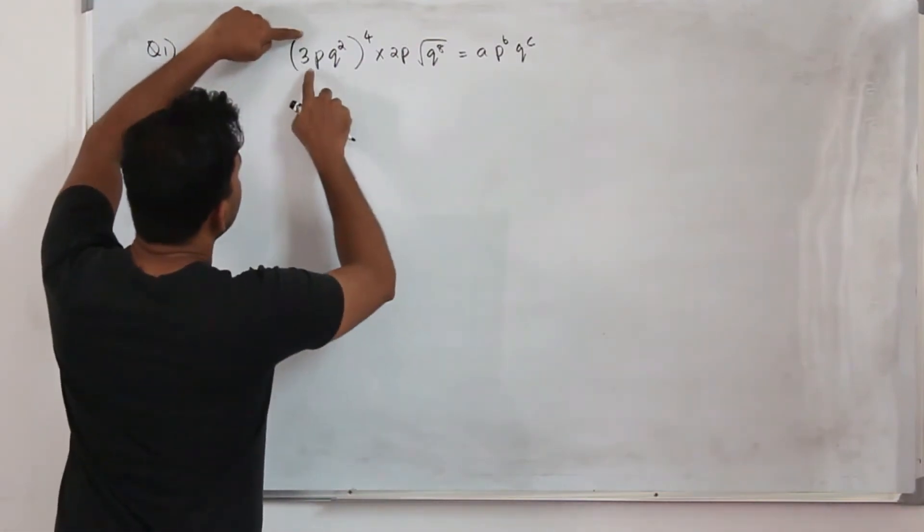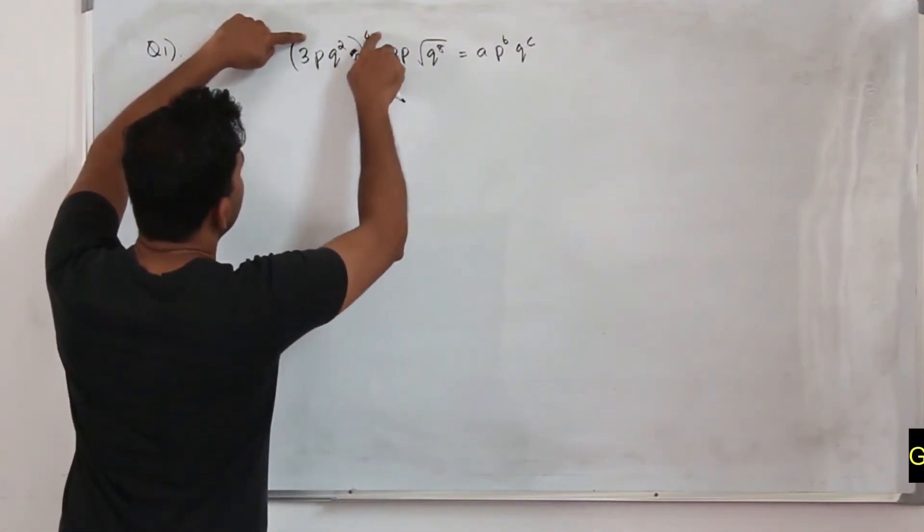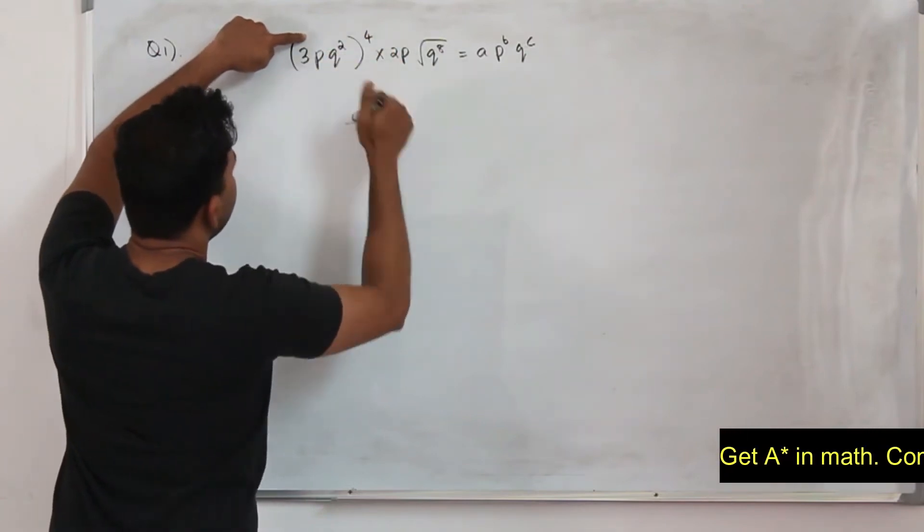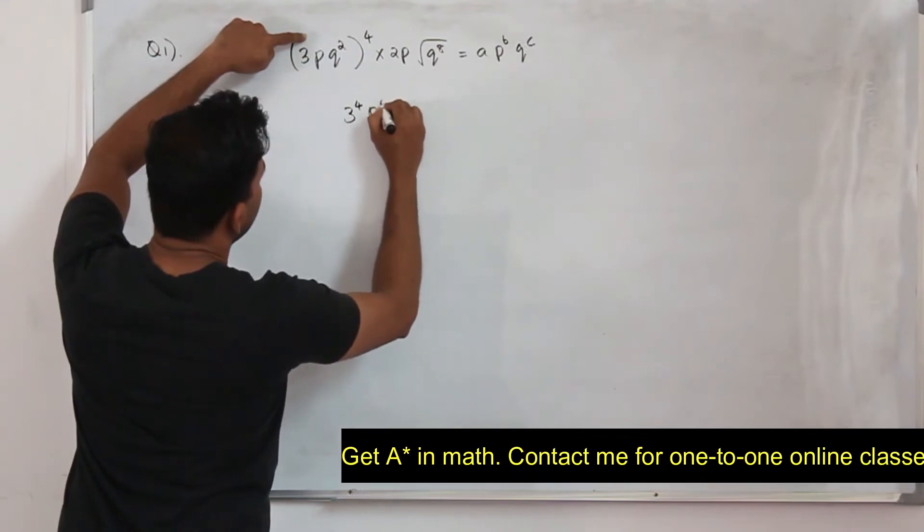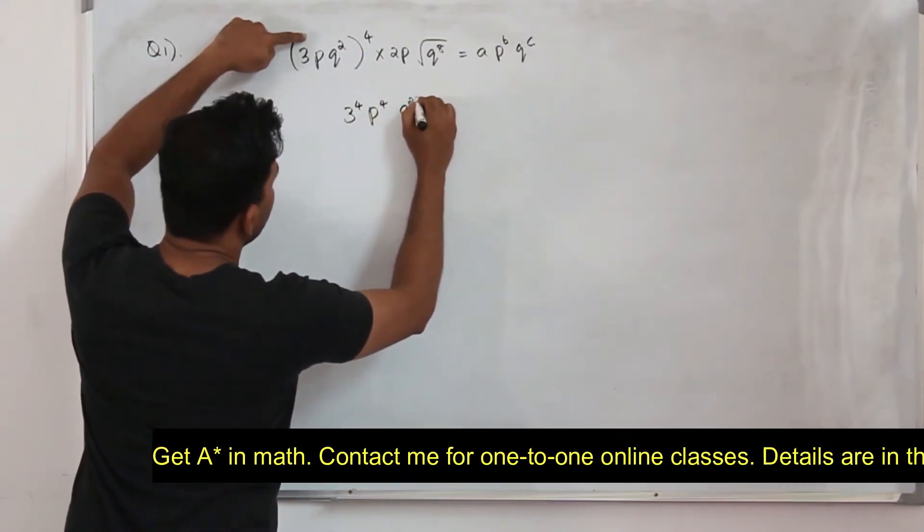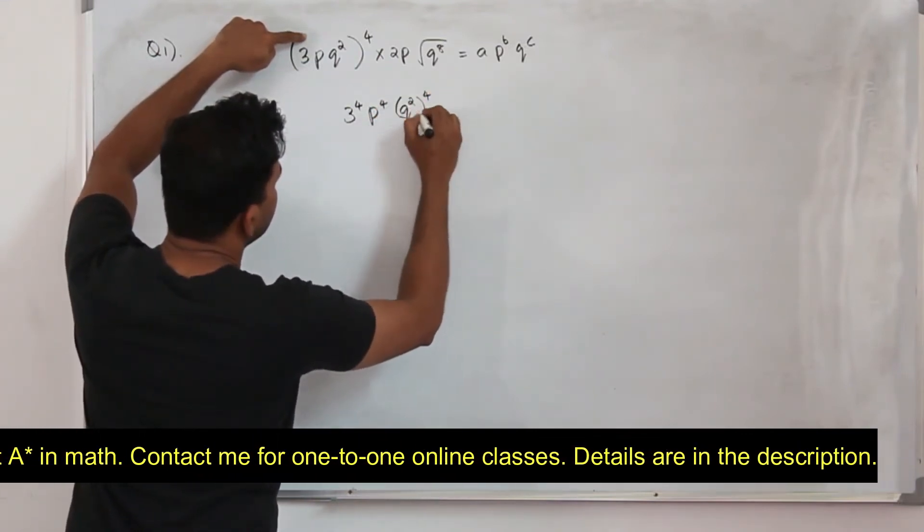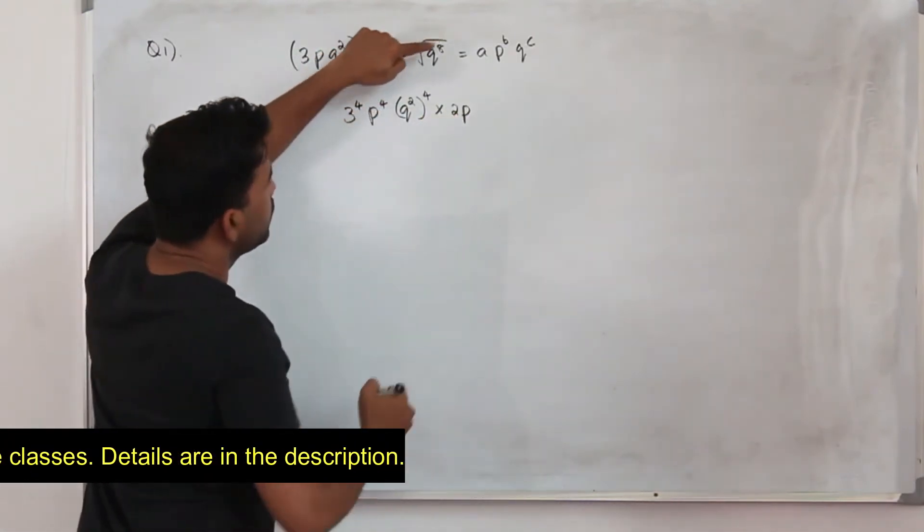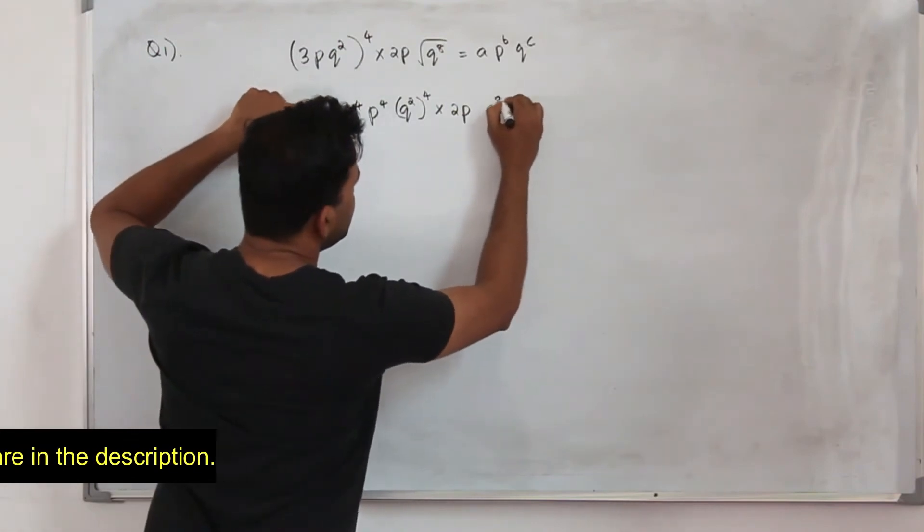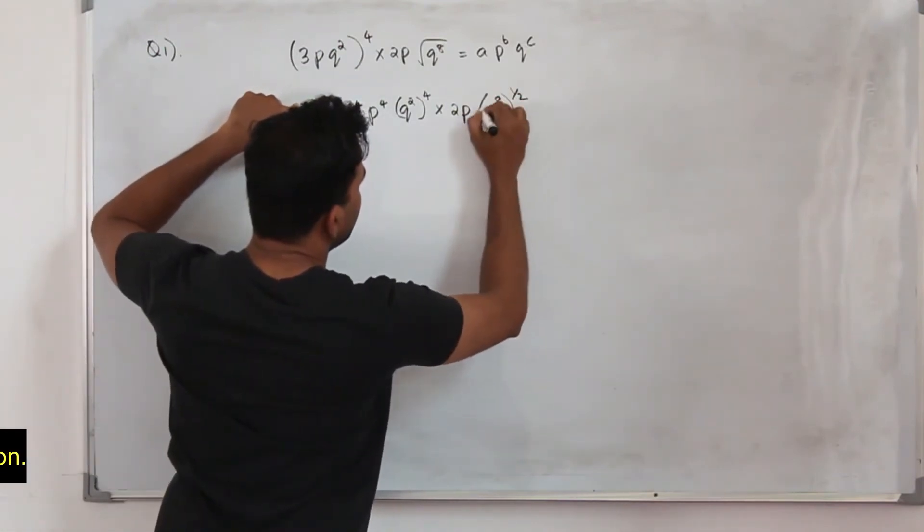First thing, when you have (3pq²)⁴, you need to put power 4 for everything. So it will be 3⁴ × p⁴ × (q²)⁴ times you have 2p here, square root of q⁸. Write it as q⁸ to the power half.